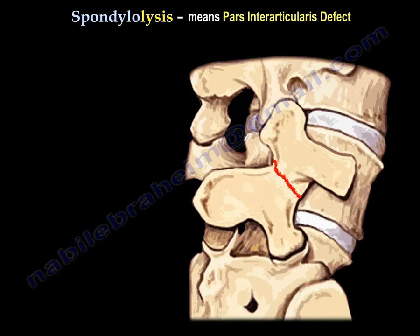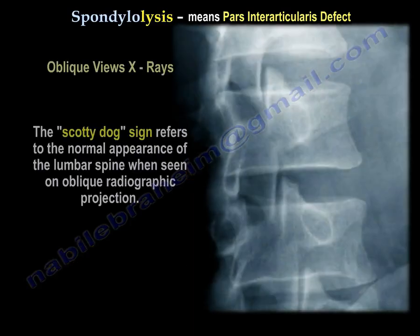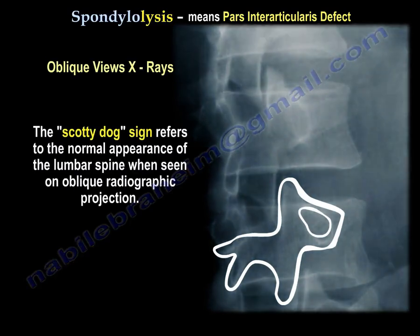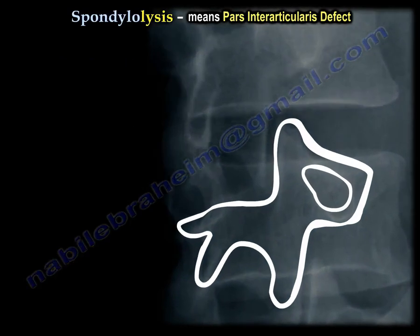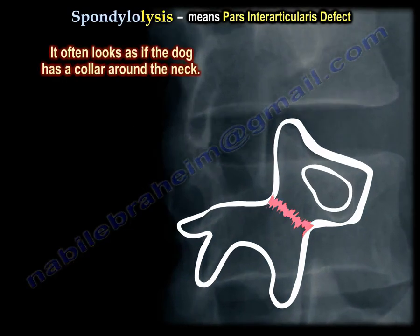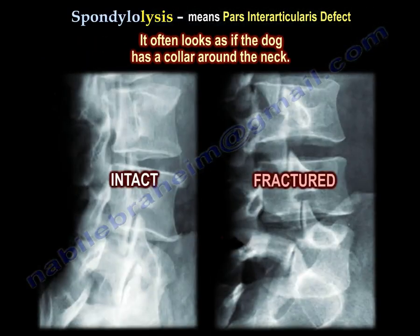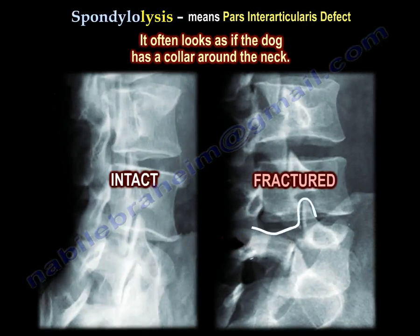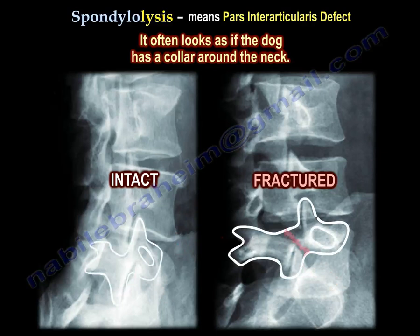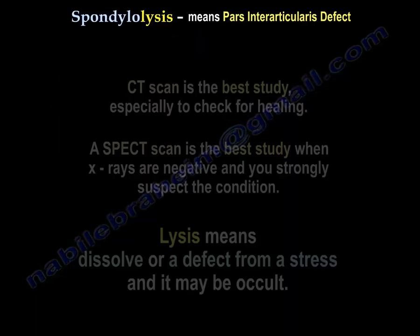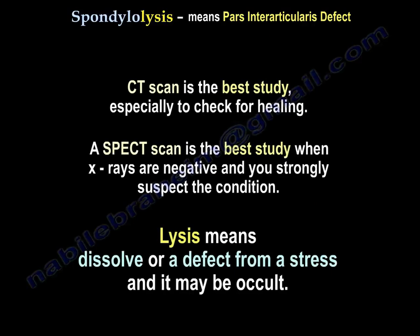If you get oblique X-rays, you will see the Scotty dog sign. The SPECT scan is used to diagnose it if the X-ray is negative.